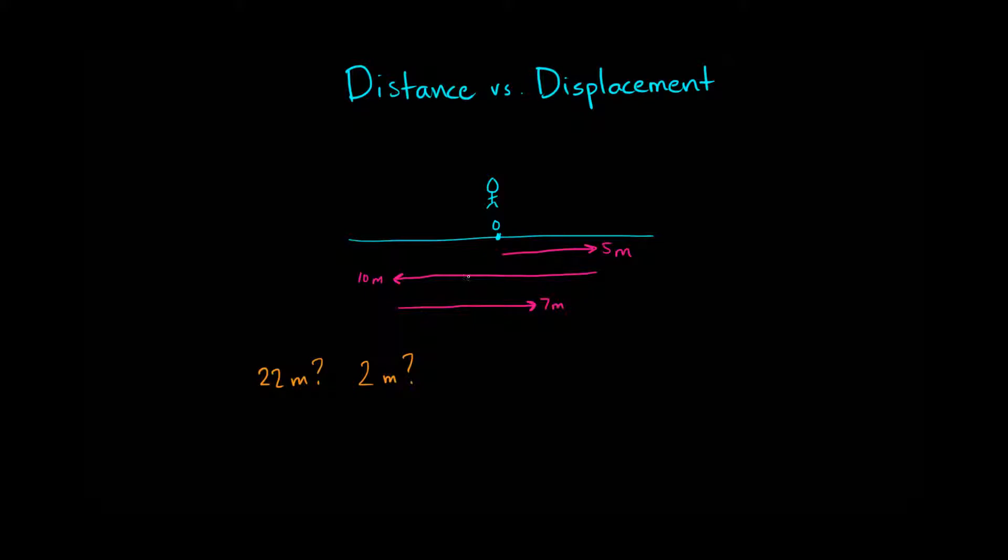Well, this problem can be interpreted both ways. You can say 22 meters because I did 5 meters, then 10 meters, and then 7 meters, so 5 plus 10 plus 7 gives me 22 meters.